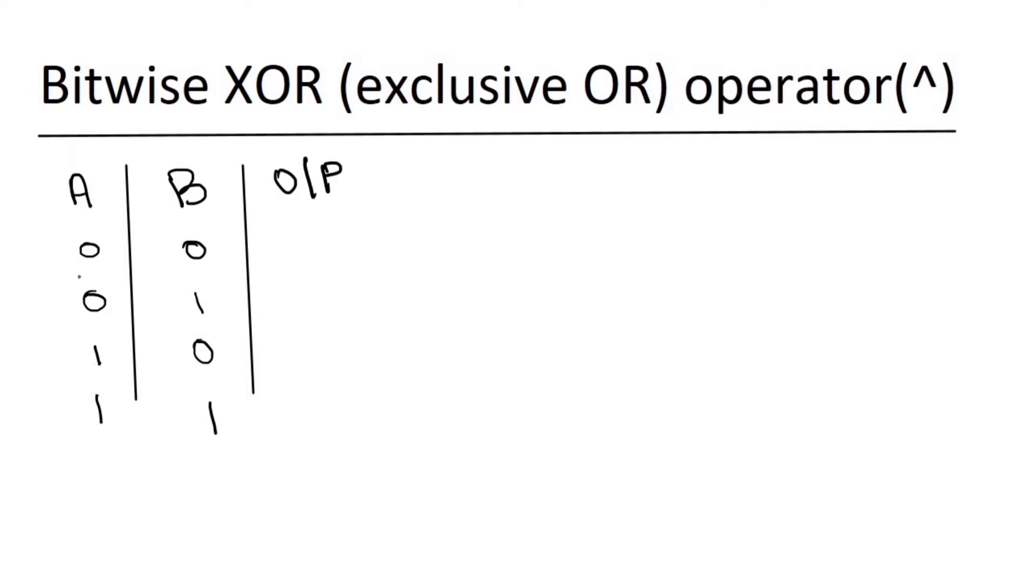If both inputs are the same, that is 0 0 and 1 1, then the output is always 0. And if they are different, that is 0 and 1, then the output is 1. So let's take an example.